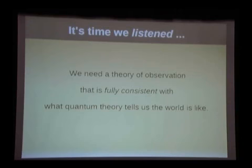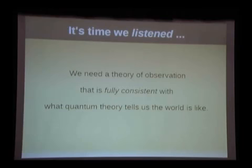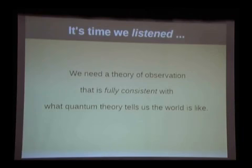If we believe quantum theory — which is a big if, since it's an empirical theory and may be false — the history of science indicates it almost certainly is false, because all theories we've had in the past have turned out to be false. But if we believe it, what it tells us about observation defines a starting point for thinking about other things. If we want to develop a theory of consciousness related to how we observe the world, we need to start with what quantum theory tells us the world is like, not start with something else.